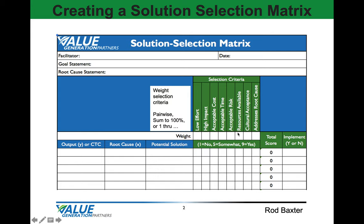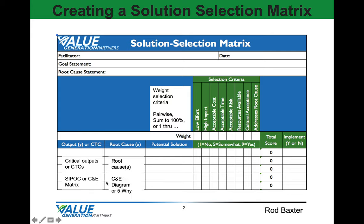Then you're going to determine what the output or critical-to-customer characteristic is that we're working on, and that may come from a SIPOC or a cause-and-effect matrix. Then we'll enter the root cause, which may come from our cause-and-effect diagram or a 5-Why root cause analysis.